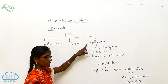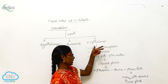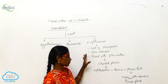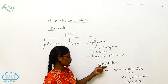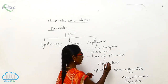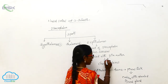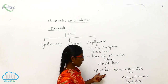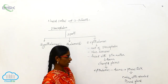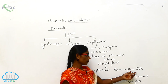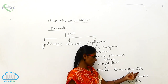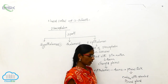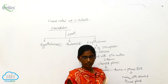The epithalamus is the roof of the diencephalon. It is a non-nervous part fused with the pia mater and forms the choroid plexus. The epithalamus forms a pineal stalk that continues and ends with a rounded pineal gland.